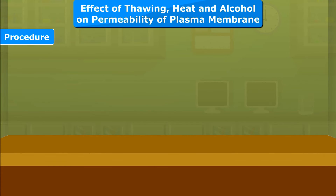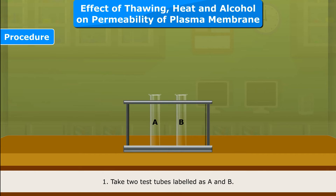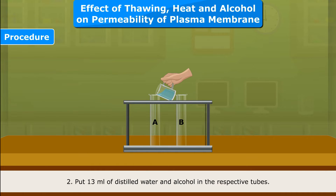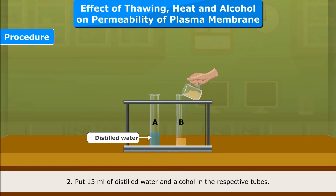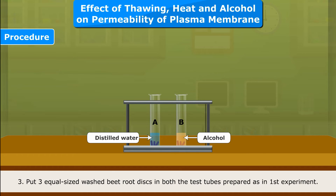Procedure: Take two test tubes labelled as A and B. Put 13 ml of distilled water and alcohol in the respective tubes. Put three equal-sized washed beetroot discs in both the test tubes prepared as in the first experiment.